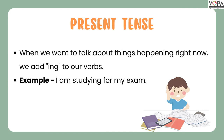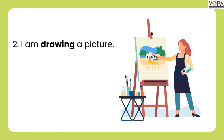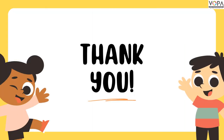Present tense. When we want to talk about things happening right now, we add -ing to our verb. For example: I am reading a book. I am drawing a picture. I hope you understood the tenses. Thank you.